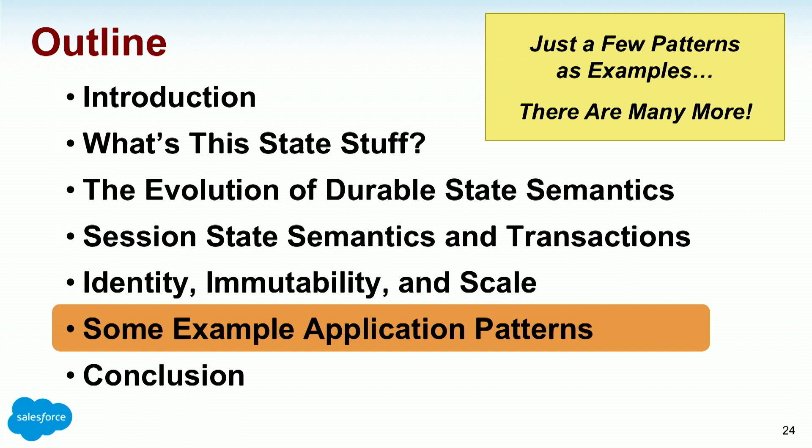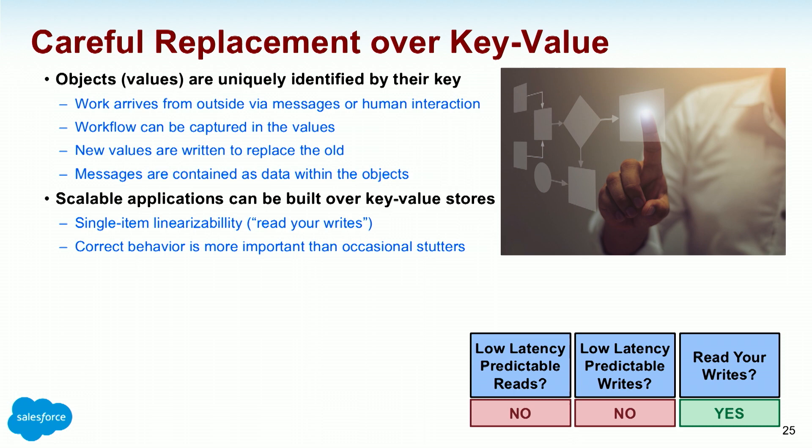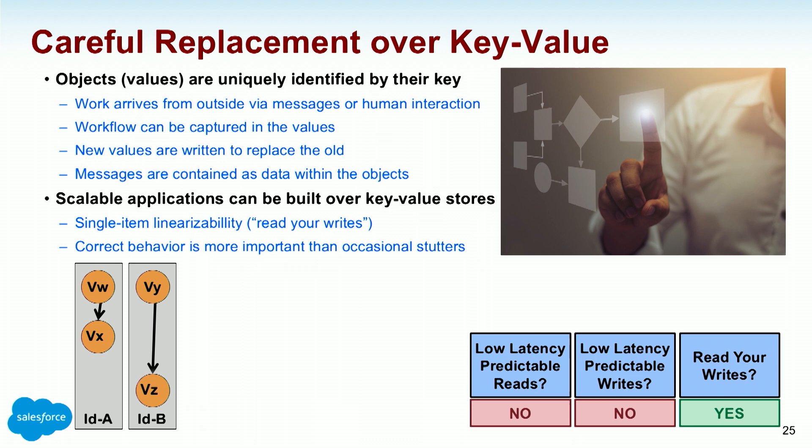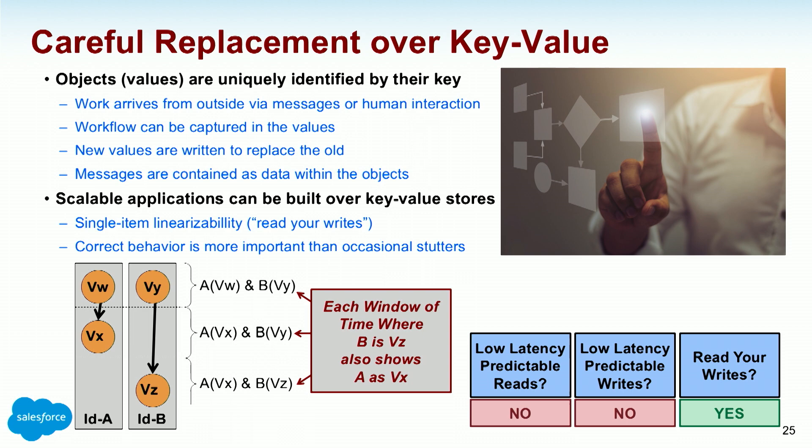Let's dig into some app patterns. Careful replacement over key-value: objects are uniquely identified by their key, workflow is captured, and scalable apps can be built over key-value stores. This is what you do when working with another business — B2C, B2B — trying to make sure that state is accurate. Careful replacement over key-value is very valuable.